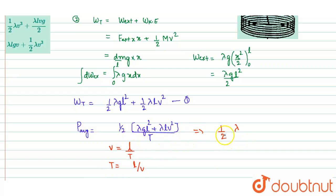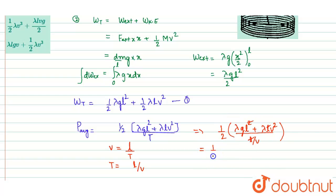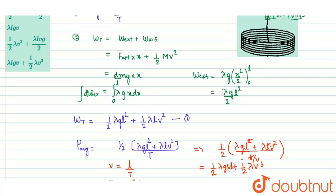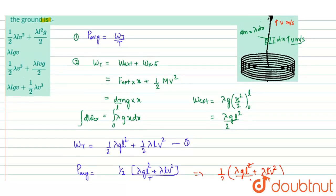Substituting t equals l over v into the average power formula: power equals (half lambda g l squared plus half lambda l v squared) divided by (l over v). Simplifying, v comes upward and l cancels, giving average power equals half lambda g v l plus half lambda v cubed.